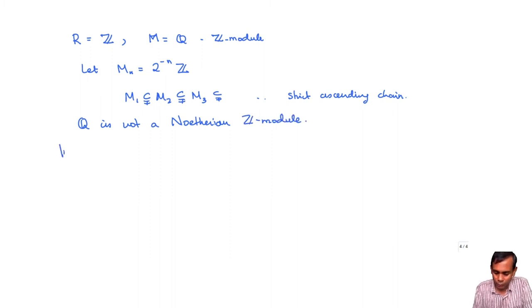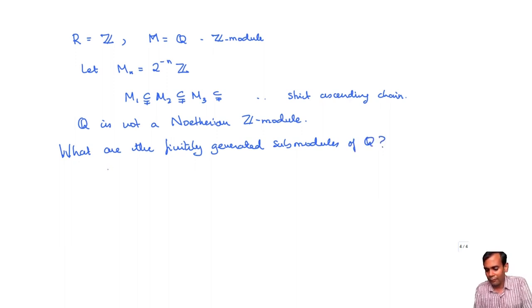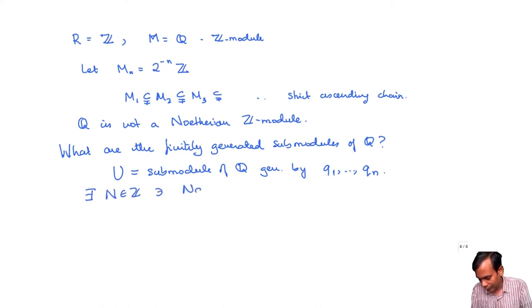What are the finitely generated submodules of Q? So suppose we have a submodule of Q, which is generated by, let's call this submodule U. And U is the submodule generated by some rational numbers Q1, Q2, Q_n. Then I can multiply out all these rational numbers by some large integer, say the product of their denominators. You take, there exists N belongs to Z such that NQ1, NQ_n are all integers.